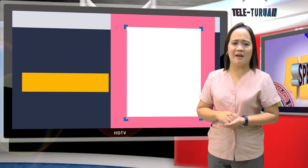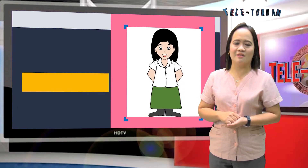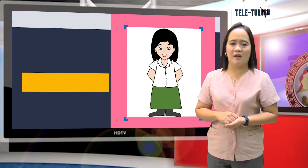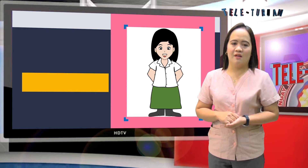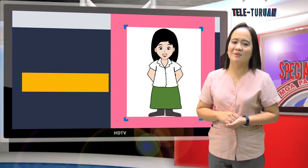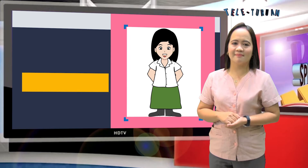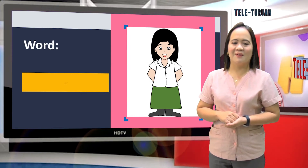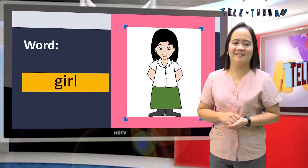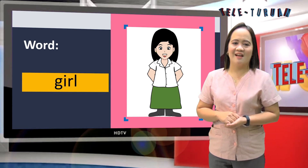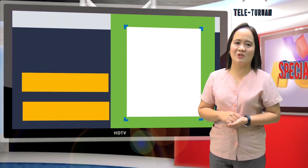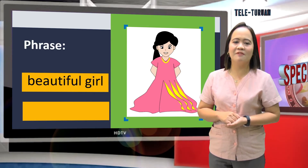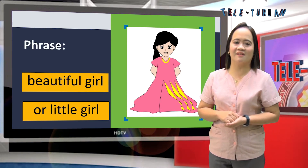How can we describe the illustration? Let us describe the pictures through word, phrase, or sentence. Let's first describe the picture through a word. Correct — girl. How about describing the picture through a phrase? Very good — beautiful girl or little girl.